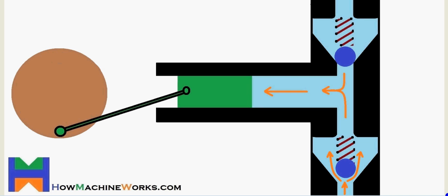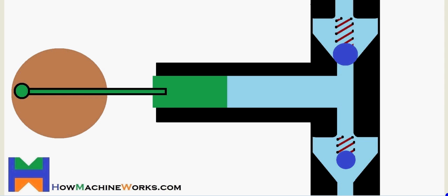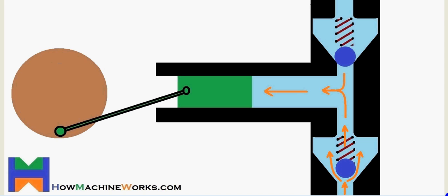The inlet valve opens up and oil enters through the inlet valve. That's carried into the body of the plunger pump itself. The outlet valve will be closed at this condition.